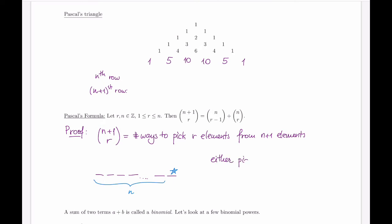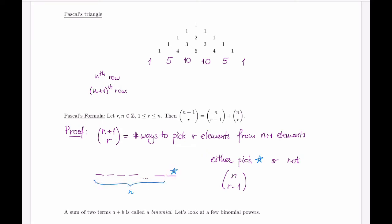If I do pick the special element as part of my collection, I have to pick r elements in total. I've already chosen this one, so I only need to choose r−1 remaining elements. The total collection had n+1 elements and I've already picked one, so I'm choosing from the remaining n. That gives n choose r−1. In other words, instead of choosing r, I'm choosing r−1 from the remaining n elements.